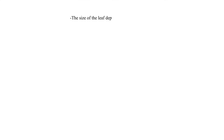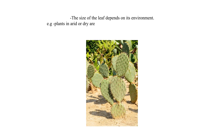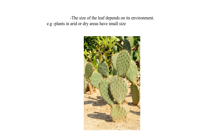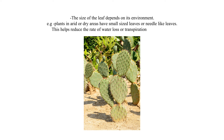The size of the leaf depends on its environment. For example, plants in arid or dry areas have small-sized leaves or needle-like leaves. This helps reduce the rate of water loss or transpiration in such plants.